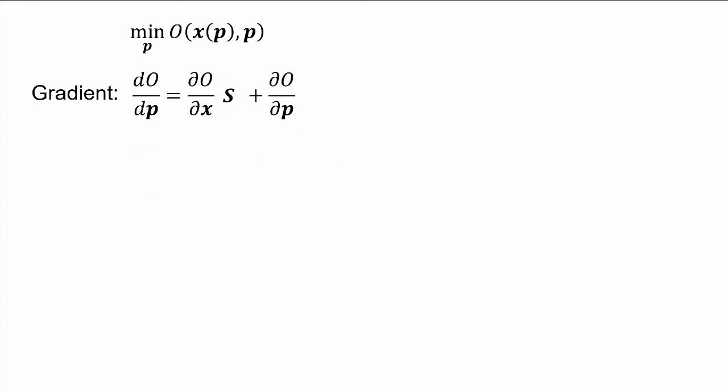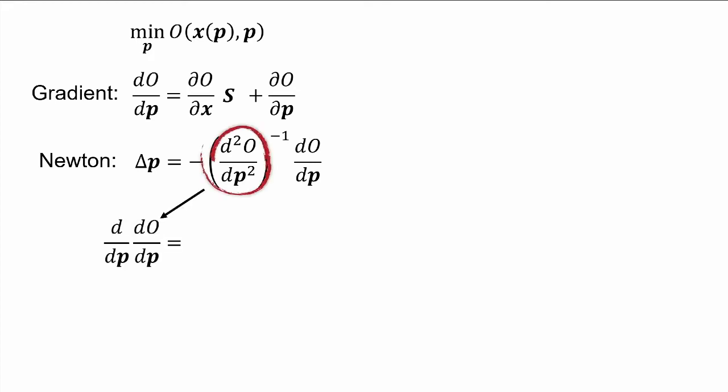Now that we know how to compute this term, we can plug it into our gradient, and we are ready to apply first-order methods such as gradient descent or LBFGS. However, these methods usually converge far too slowly. So, a better option would be to use Newton's method, where we also use the Hessian in order to find a suitable search direction.